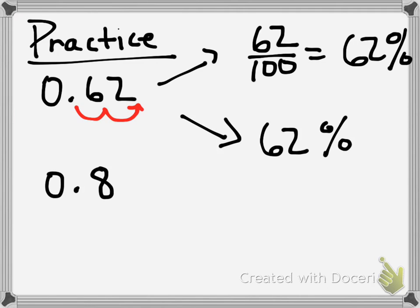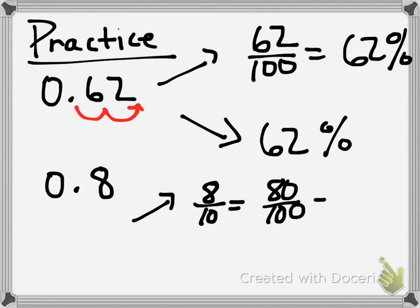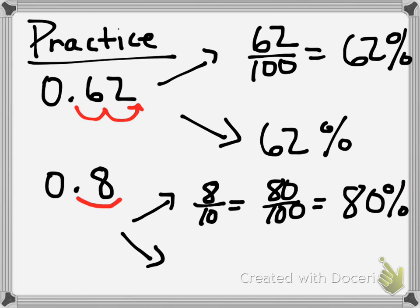Next one: eight tenths (0.8). Two ways. First, as a fraction: eight over ten, which is equal to eighty over one hundred, which is eighty percent. Then the decimal point method: if I have eight tenths and move that decimal point two spots to the right, it's not going to be eight percent — I have to add that zero in as a placeholder — so this is going to be eighty percent.